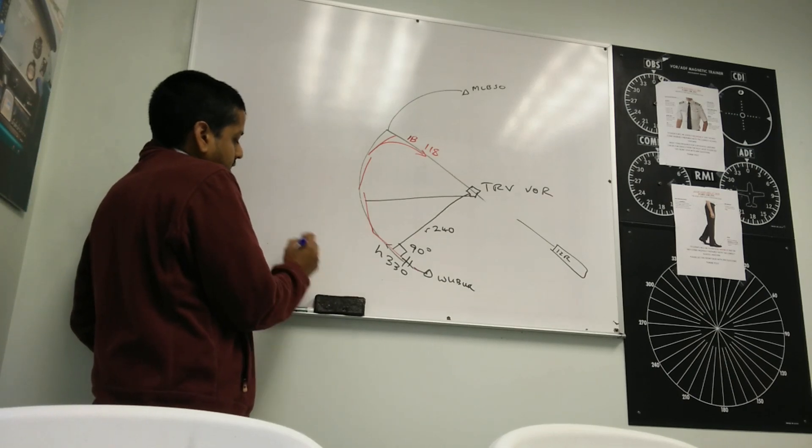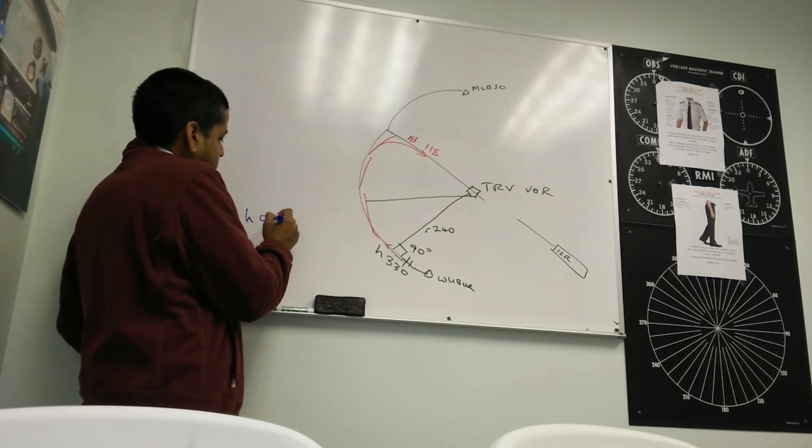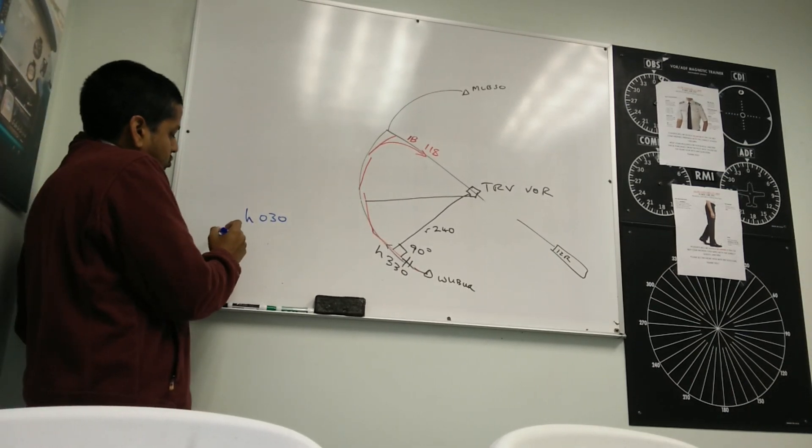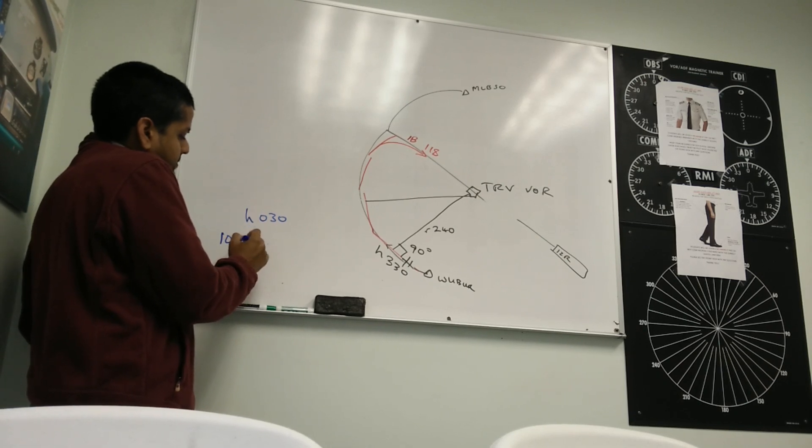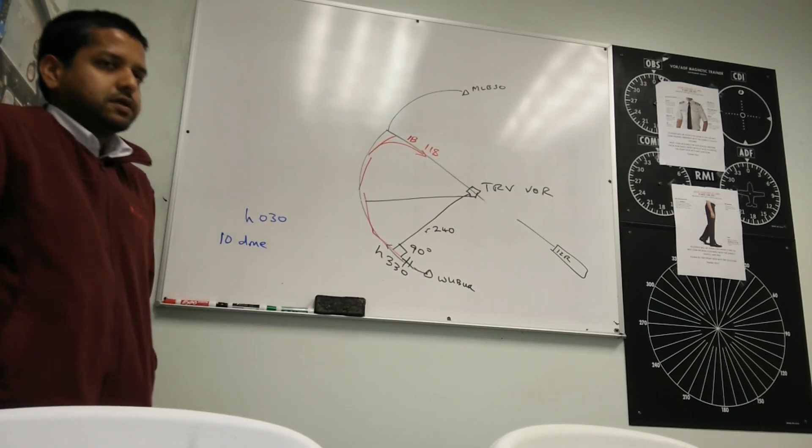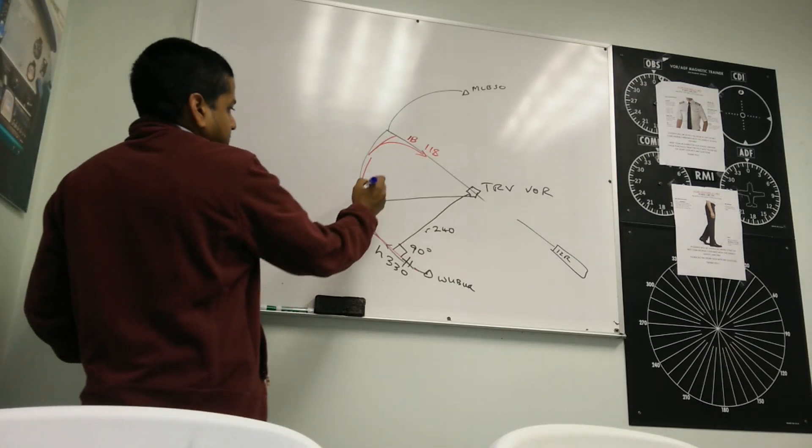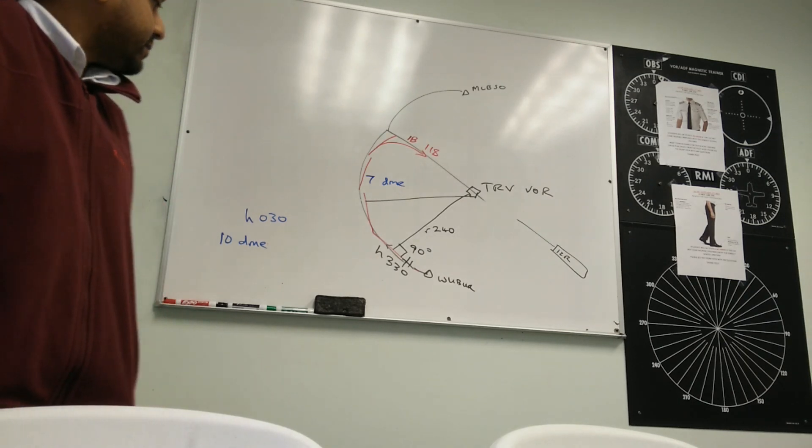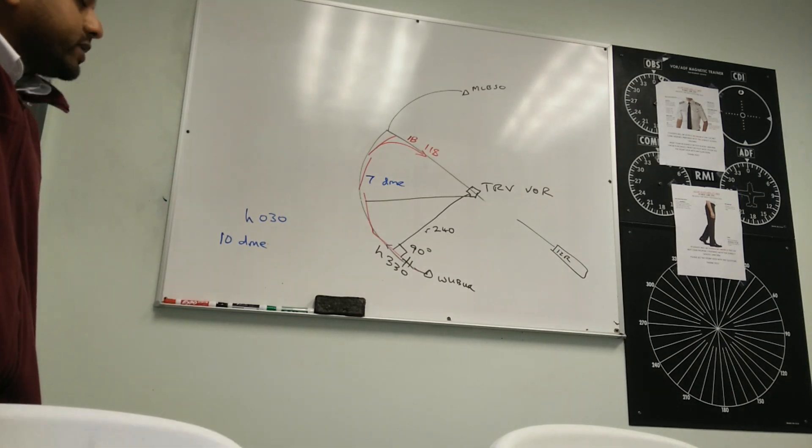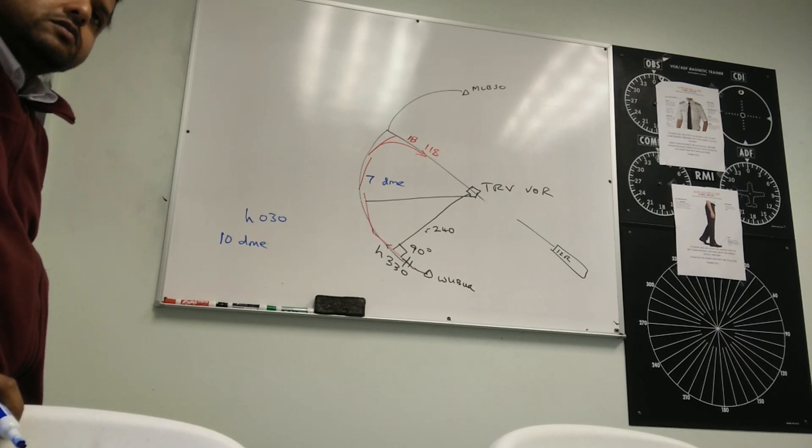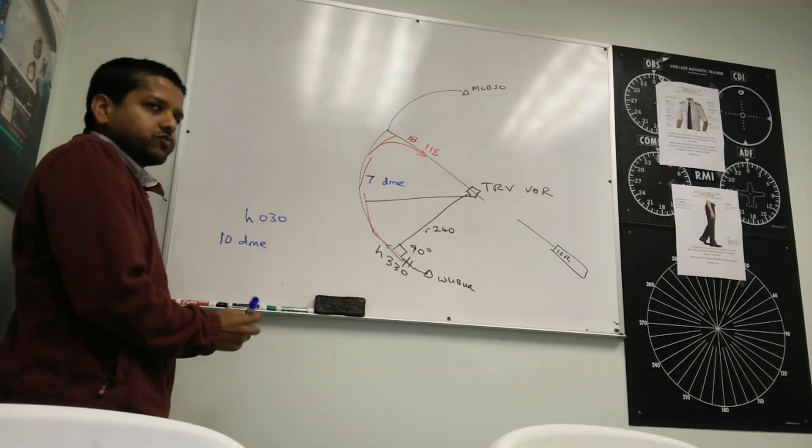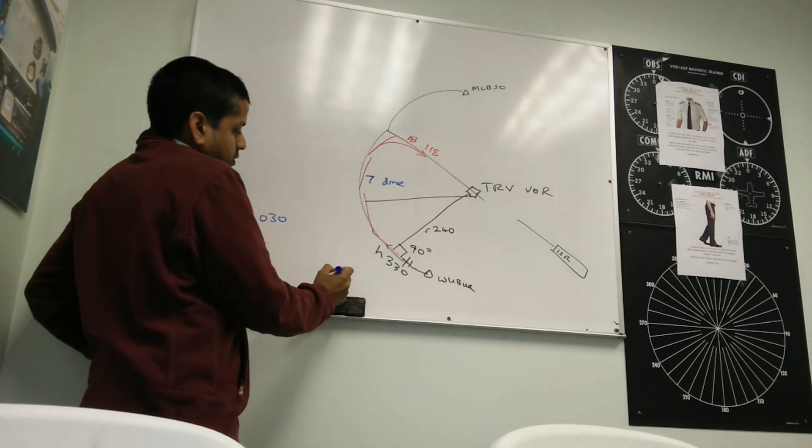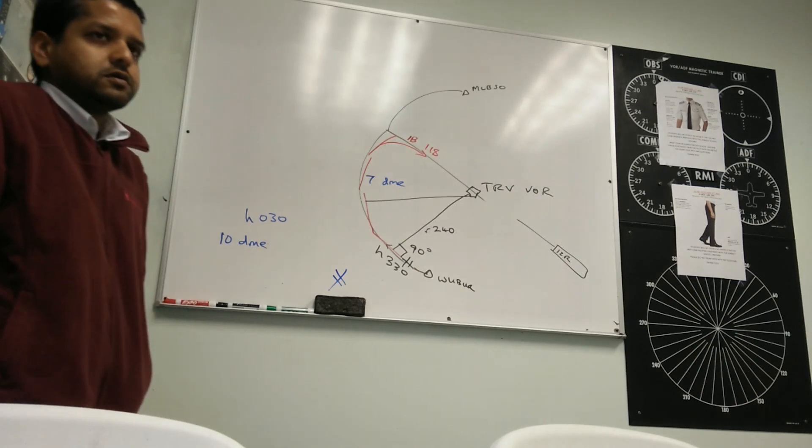Let's say that the airplane is heading 030. And you are, let's say you are 10 DME. And this, by the way, is a 7 DME arc. So are we inside or outside the arc? Outside. We are outside the arc. And we are heading 030. That means our aircraft must be flying this way. So that means we must be somewhere over here.